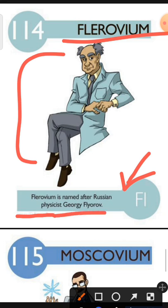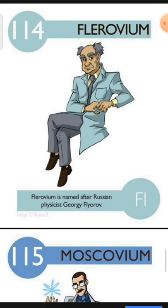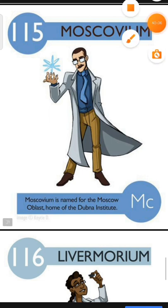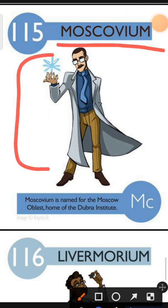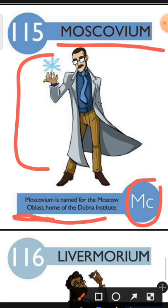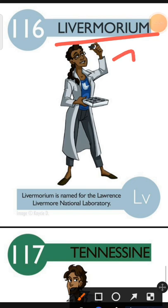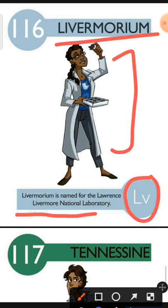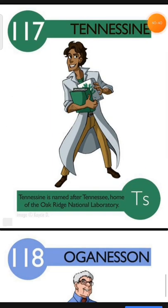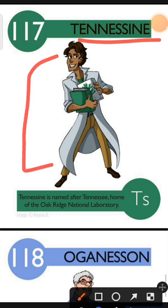Element number 115 is Moscovium. Element number 116 is Livermorium. The characteristic of Livermorium is: Livermorium is named for the Lawrence Livermore National Laboratory. Element number 117 is Tennessine. The characteristic of Tennessine is: Tennessine is named after Tennessee, home of the Oak Ridge National Laboratory.